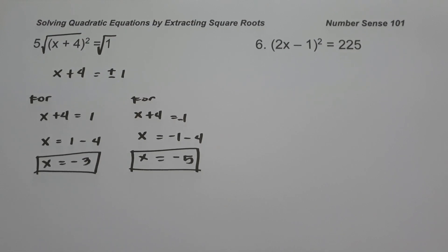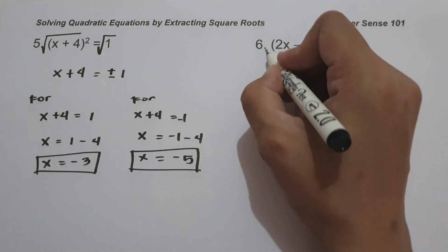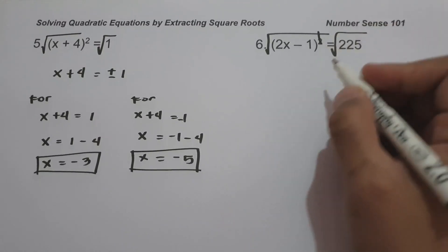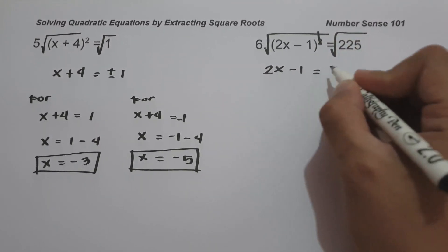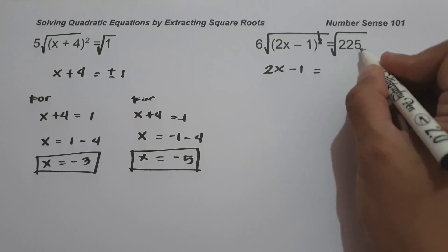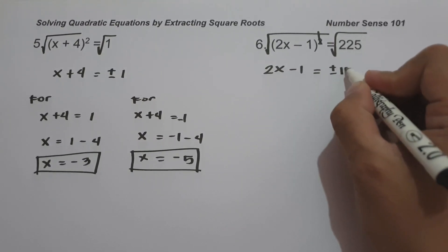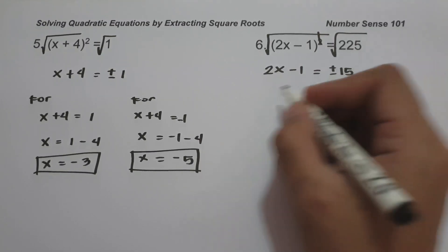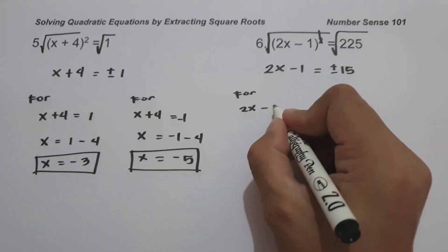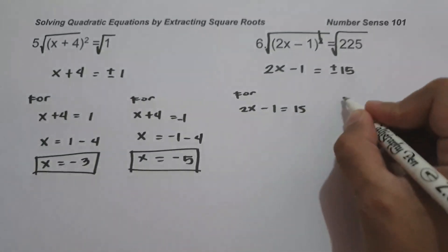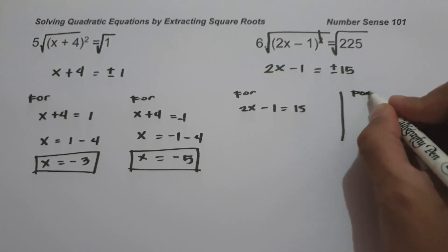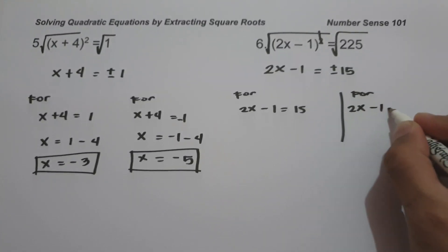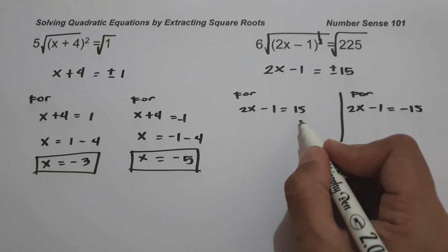On number six, we have (2x - 1)² = 225. Just like example number five, let us take the square root of both sides. So this gives us 2x - 1 = positive and negative 15, since the square root of 225 is positive and negative 15.